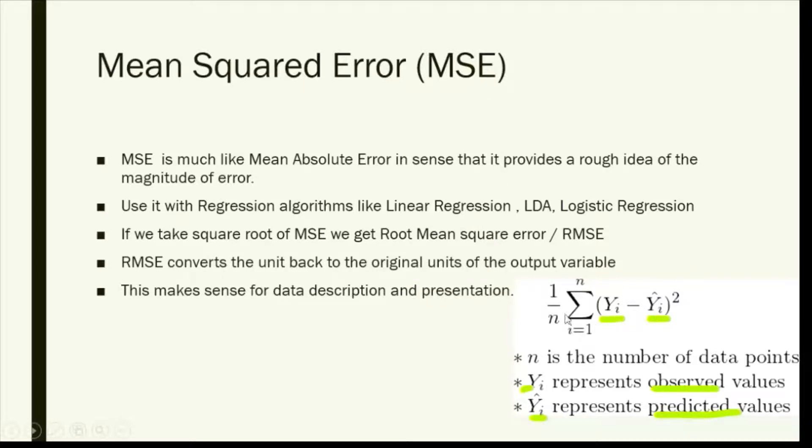You take the square - this is Mean Squared Error, you are just squaring this error. If you take the root of it, you will get the Root Mean Square. The advantage of this is you are squaring the error and you will get back the unit to the original form, which was the unit of the original output.